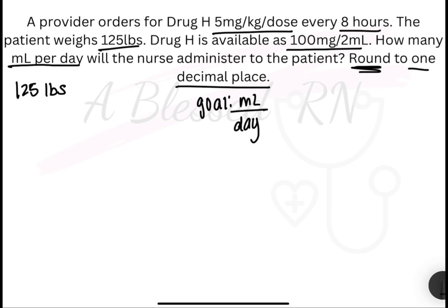Now we'll write out our puzzle pieces: PPP — patient's weight, the prescription, and then the product. So the patient's weight is 125 pounds, and the prescription is 5 mg per kg per dose.